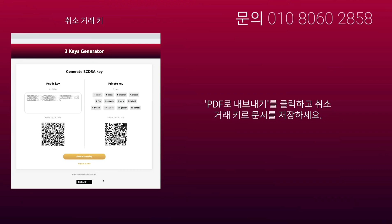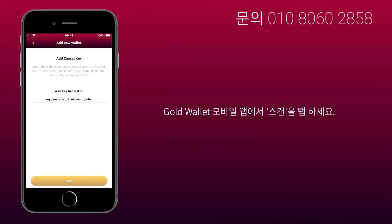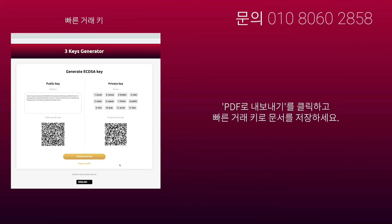Next, click Export as PDF and save this document as a cancel transaction key. Now click Generate New Key to generate a new key and stay on the website. Tap Scan on the GoldWallet mobile app. Use your mobile device to scan the public key QR code. Next, click Export as PDF and save this document as a fast transaction key.